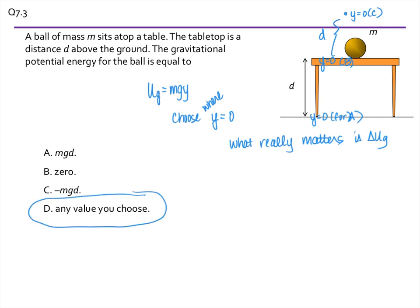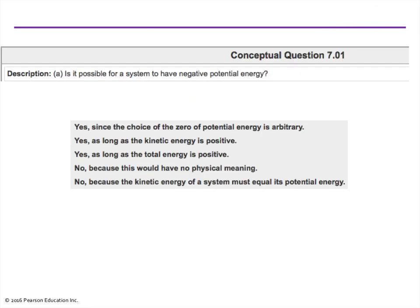And you can also see that, definitely, it's possible to have a negative potential energy. Well, I just said that in the last question, and it is possible for a system to have negative potential energy.